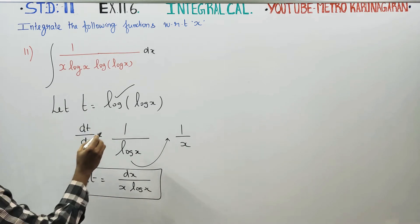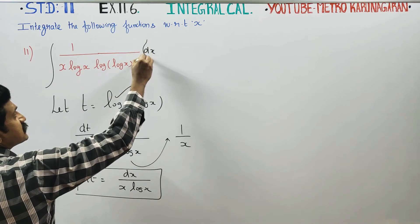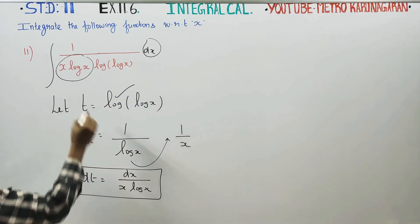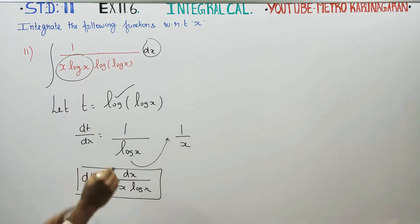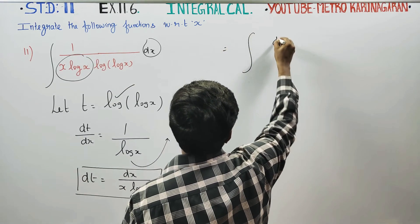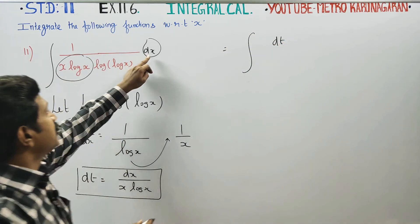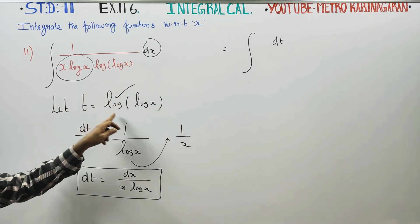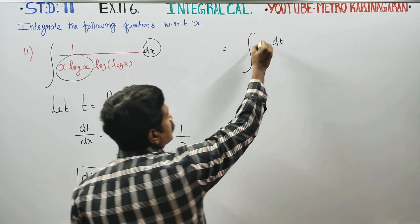Let us go to the sum. The integral of dx by x log x becomes the integral of dt. Since log log x is t, it becomes 1 by t.